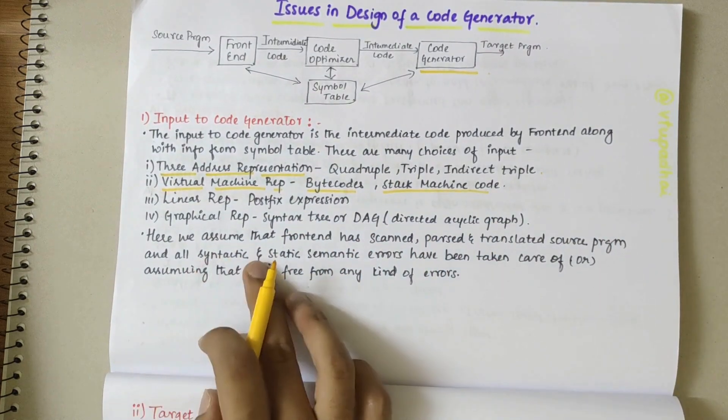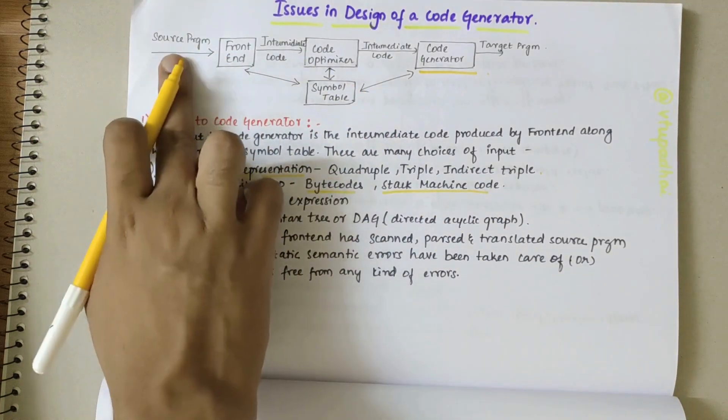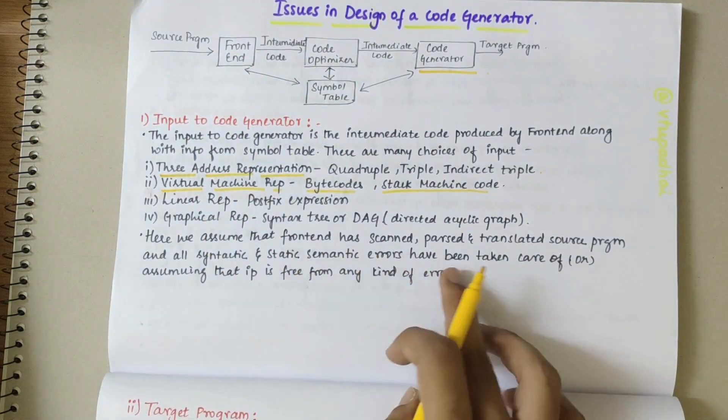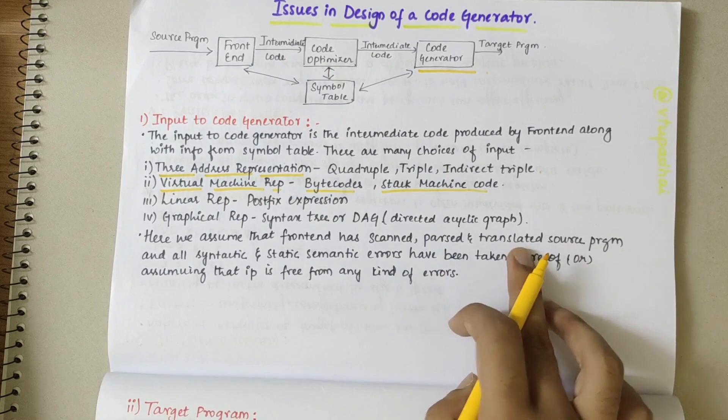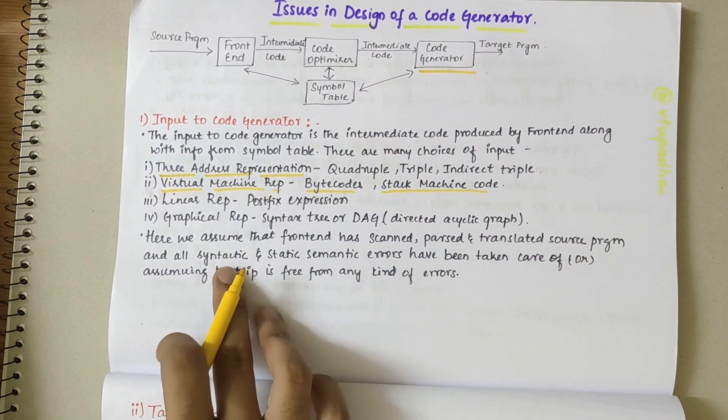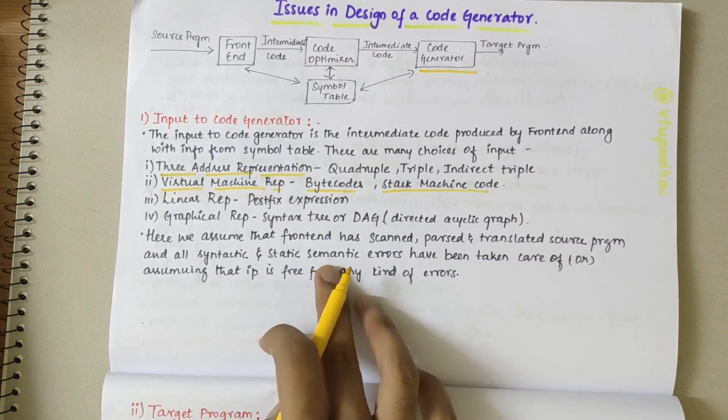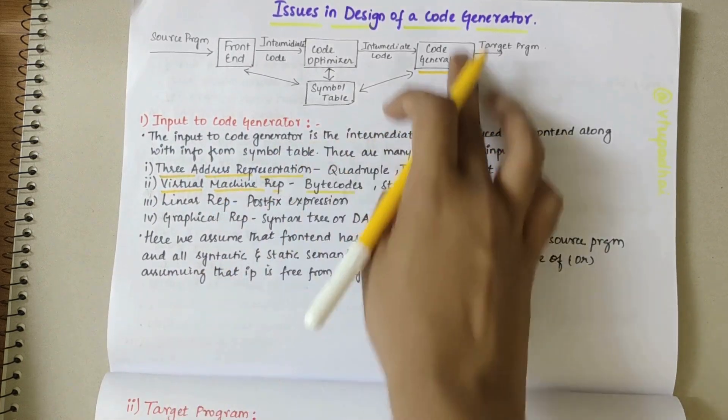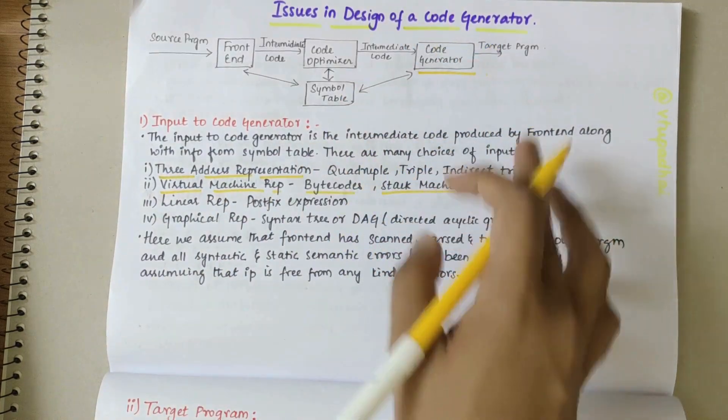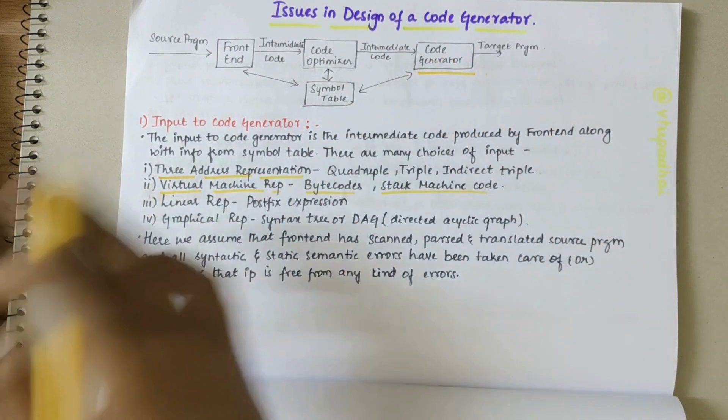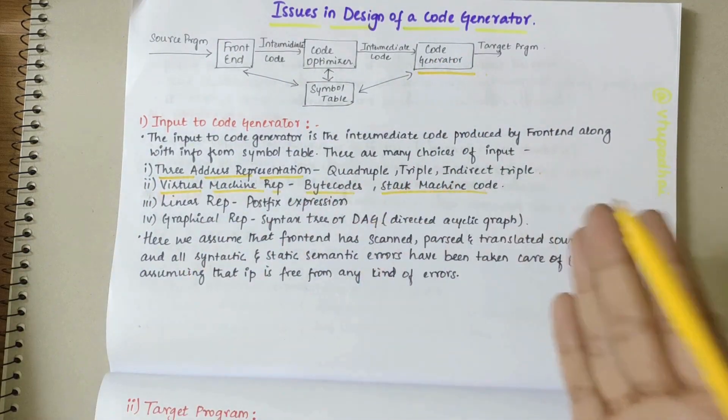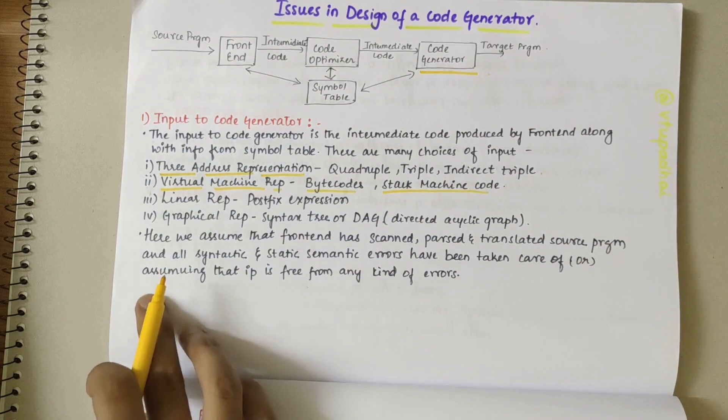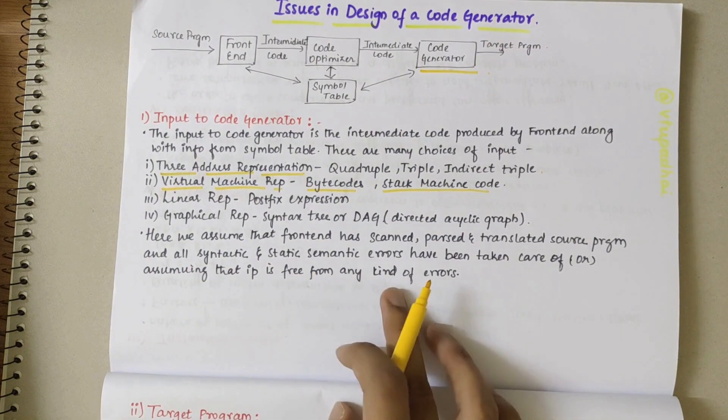Here we assume that front end has scanned the source program, parsed it, and translated the source program, and all syntactic and static semantic errors have been taken care of. We don't look into rectifying the errors. We directly take the input which might lead to issues sometimes.